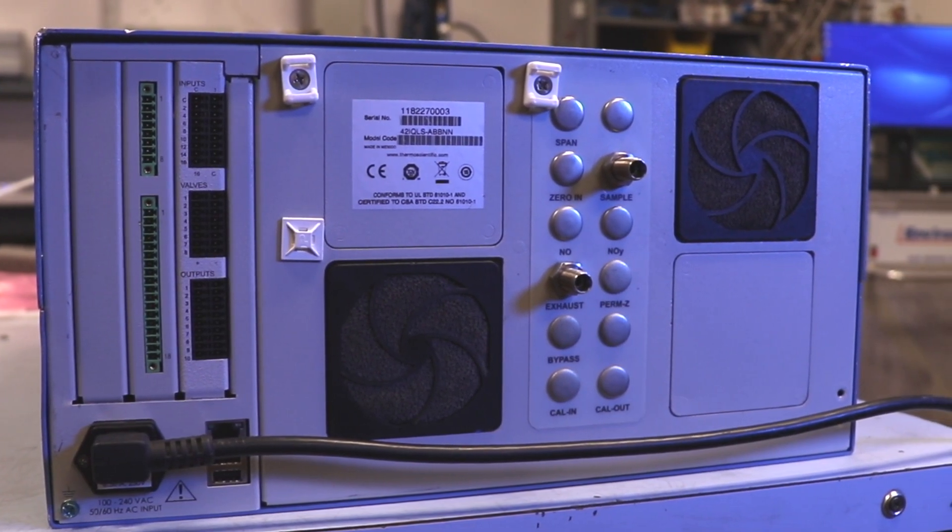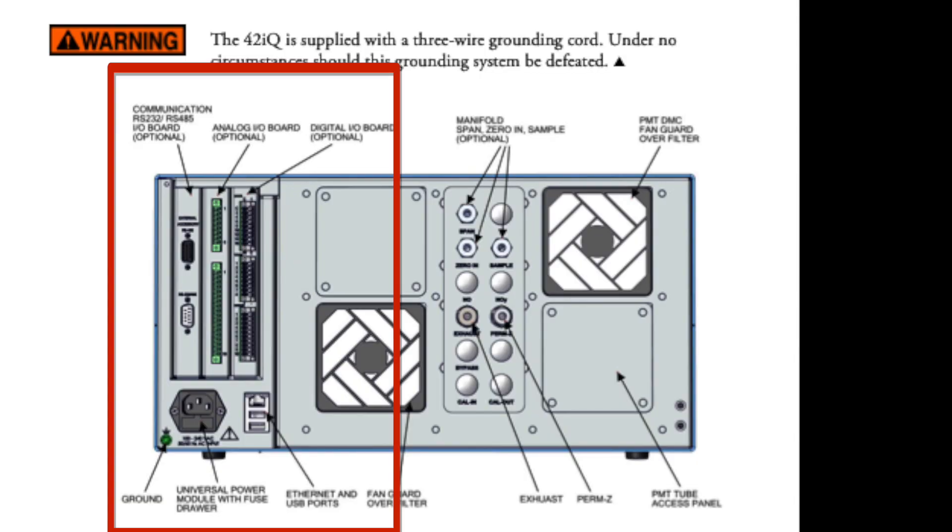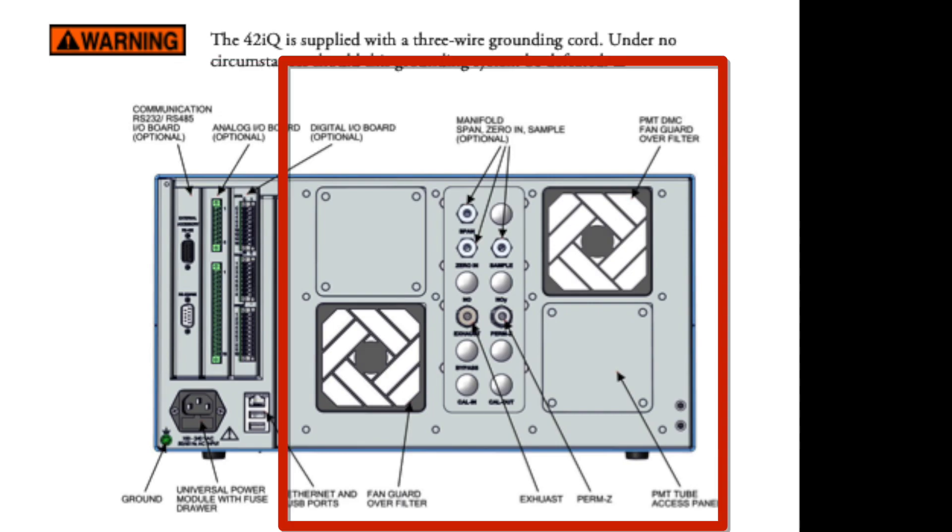Moving to the back panel, we see options for RS-232 and 485, analog, digital, ethernet, and USB ports for communications. We also see power, two fans, and a PMT access panel.